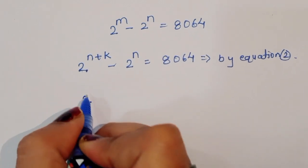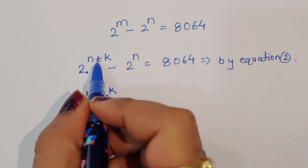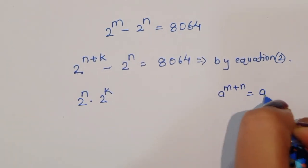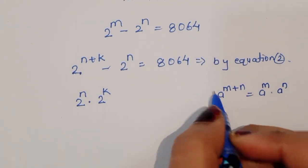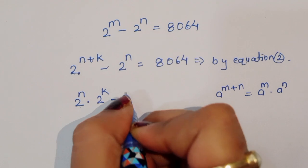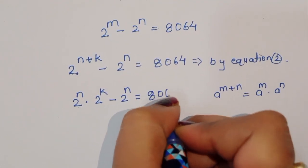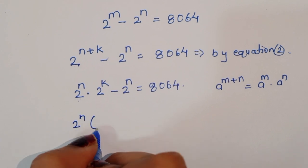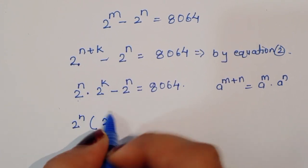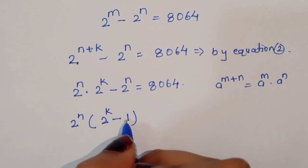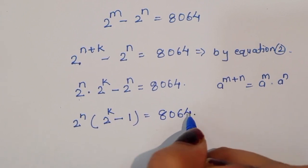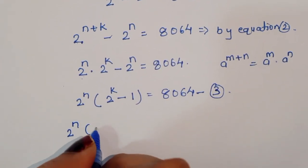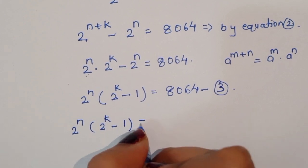Now, 2 power (n plus k) can be written as 2 power n times 2 power k, using the formula a power (m plus n) equals a power m times a power n. So we have 2 power n times 2 power k minus 2 power n is equal to 8064. Taking 2 power n common: 2 power n times (2 power k minus 1) is equal to 8064. This is equation number 3.